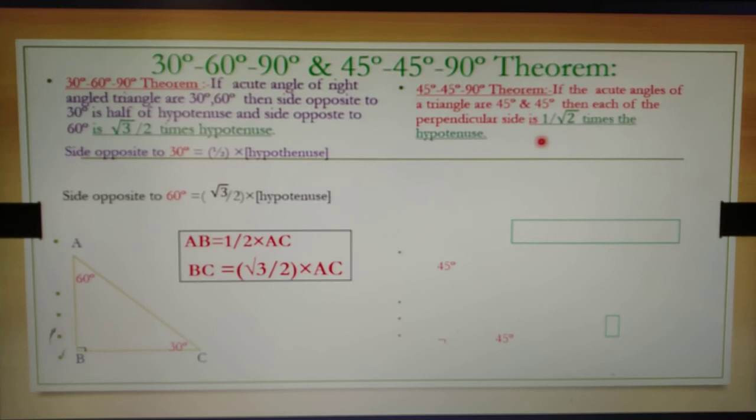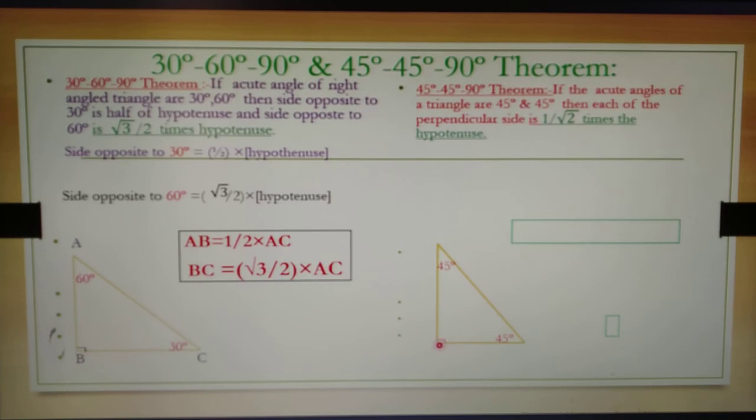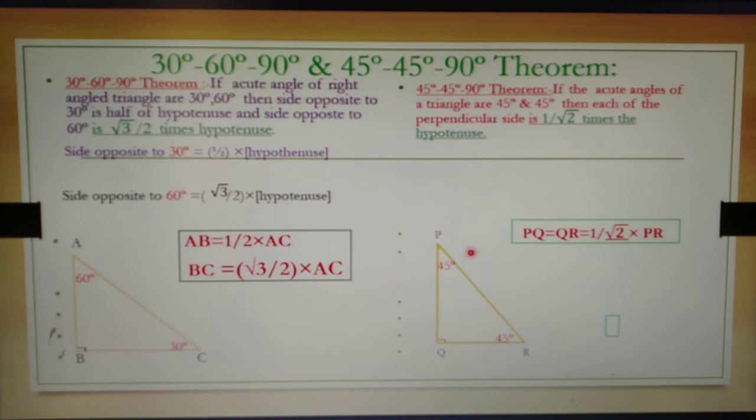Take a right angle triangle with angles 45 degrees, 45 degrees, and 90 degrees. Name the vertices P, Q, and R. The sides opposite to both 45-degree angles are PQ and QR. Each of these sides equals (1/√2) times the hypotenuse, so the side opposite to 45 degrees is (1/√2) times the hypotenuse.